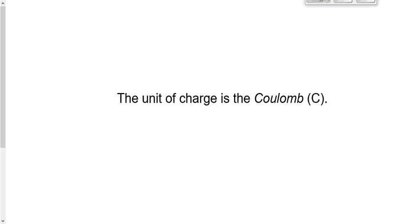So how do we describe charge? The unit of charge is called the coulomb, named after Charles Augustine de Coulomb. Just like the unit for speed is meters per second, or the unit for energy is joules, the unit for charge is a coulomb. The symbol for speed is v, the symbol for energy is E, the symbol for charge is a lowercase q. So we would say the amount of charge is q equals blank coulombs.